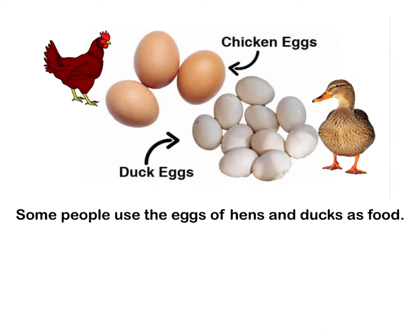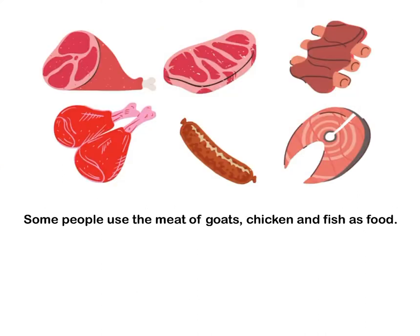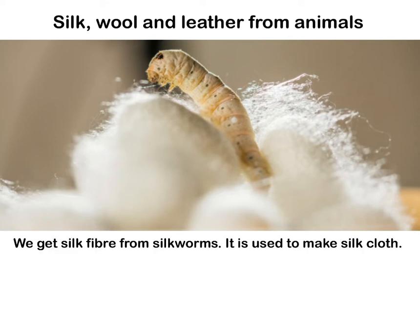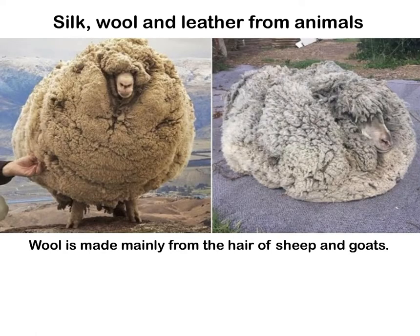Some people use the eggs of hens and ducks as food. Some people use the meat of goats, chicken, and fish as food. Silk, wool, and leather from animals: We get silk fiber from silkworms; it is used to make silk cloth.